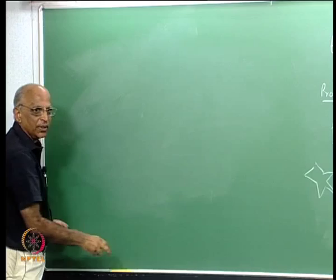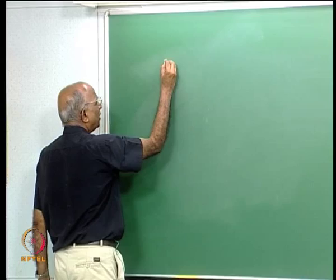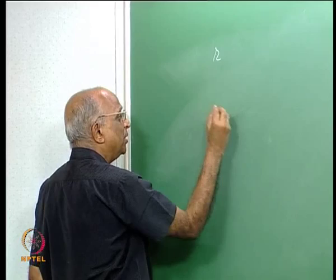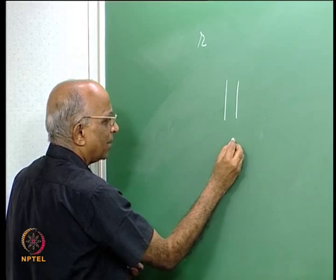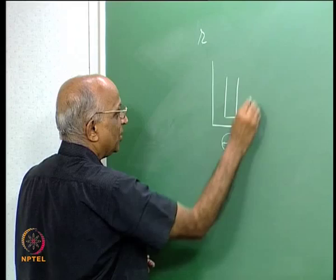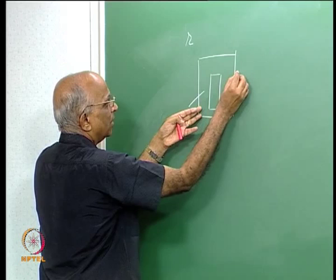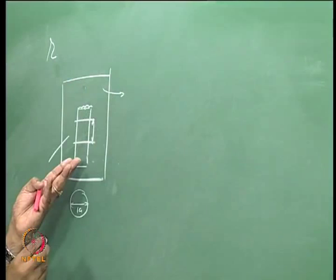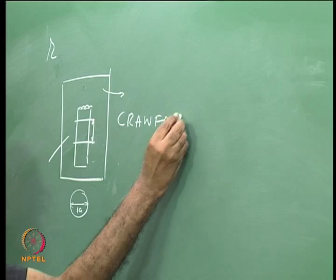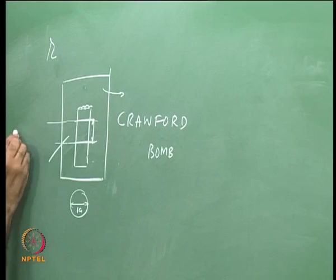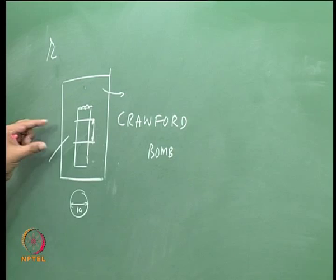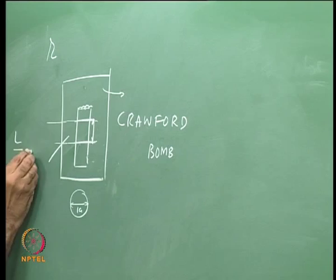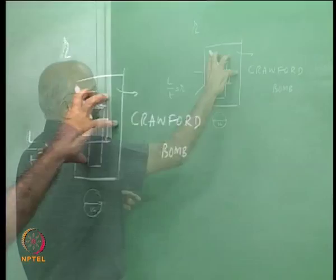Let us now revise solid propellant rocket topics. We talked in terms of burn rate r. How do we determine it? We make a small propellant strand, maybe 1 cm diameter, place it in a chamber — a Crawford bomb — pressurize the chamber to the pressure of interest, ignite the surface, and measure burn rate as r = L/t, where L is the strand length and t is the time measured by fuse wires and a timer. This gives r at a known pressure.